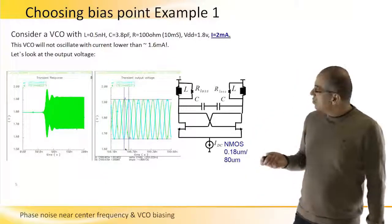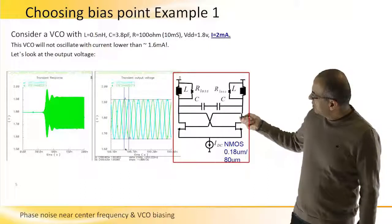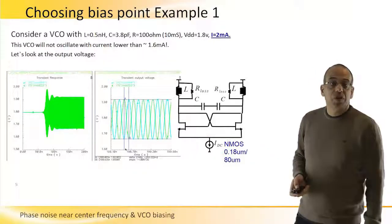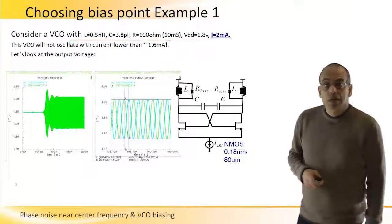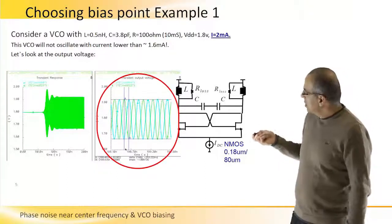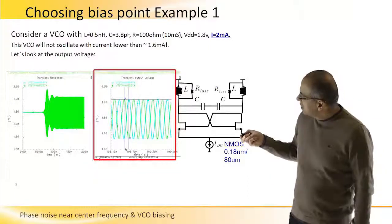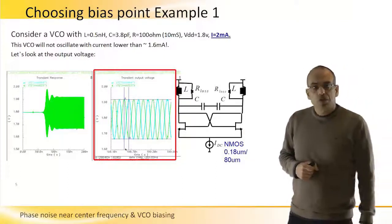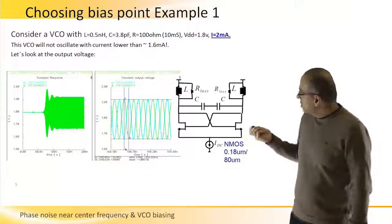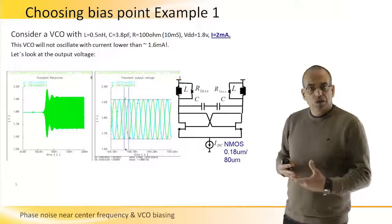Example 1 describes the VCO in the current-limited mode. The following schematic was simulated, and oscillation started when the current was around 1.6 mA for these tank values. The performance shown here represents a 2 mA bias. We can see the transient in the time domain and a zoom on the output voltage after stabilization, confirming definite oscillations at the output of this VCO.